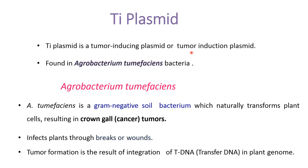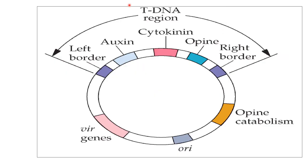Ti plasmid is a tumor inducing plasmid, or tumor induction plasmid. It is found in Agrobacterium tumefaciens bacteria. This bacteria is a gram-negative soil bacteria which naturally transforms the plant cell, resulting in crown gall tumors. It infects plants through breaks or wounds. Tumor formation is the result of integration of T-DNA, that is transfer DNA, into the plant genome.